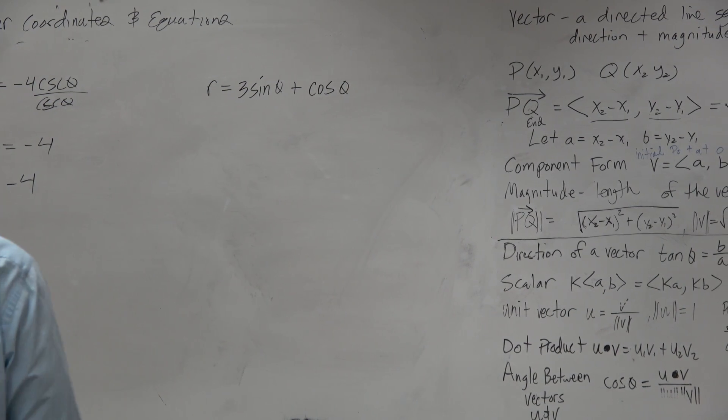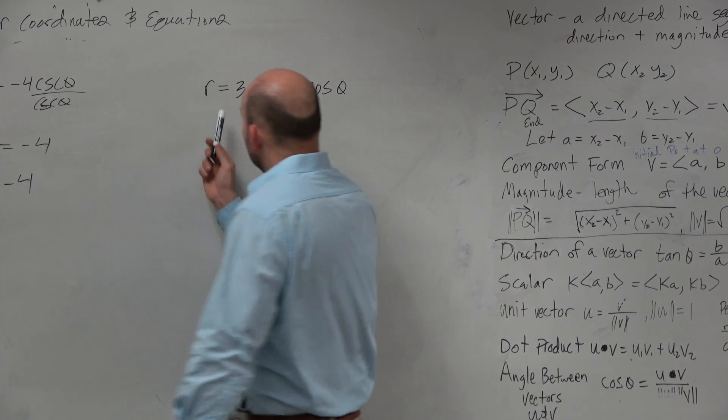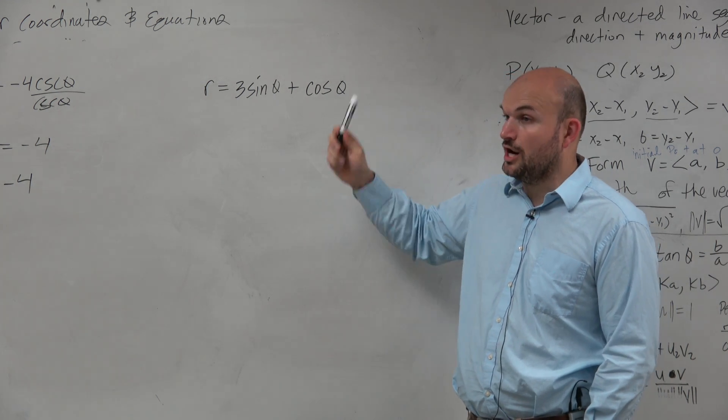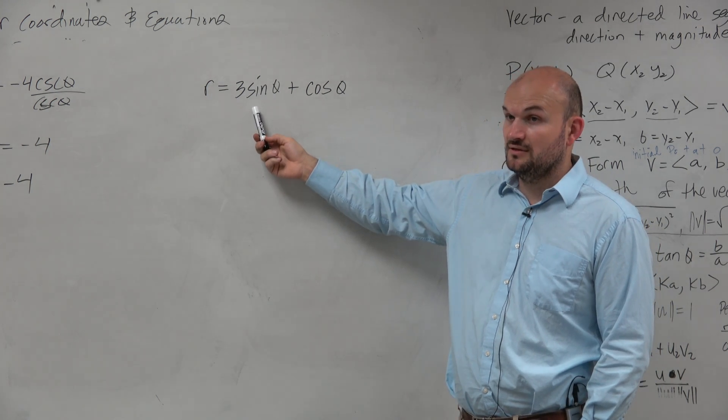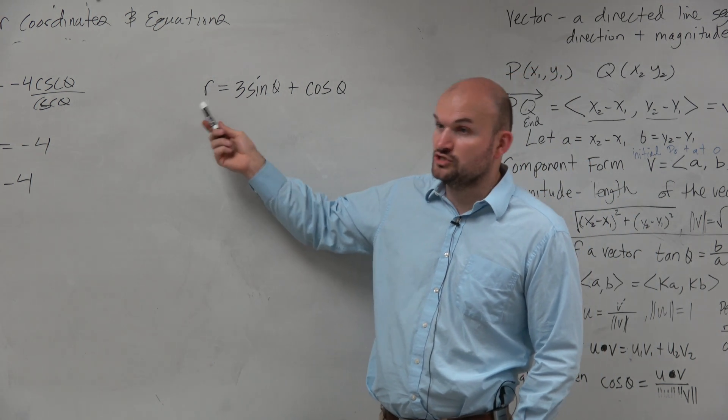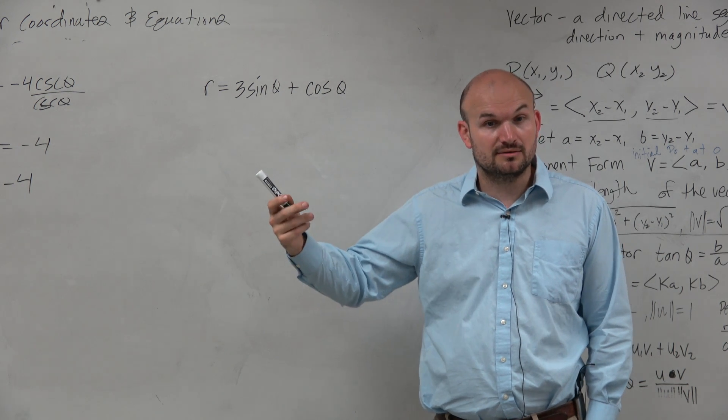All right. But this one, first of all, we said to write this in rectangular form, we need r sine of theta. Do we have r sine of theta? Like we actually need a physical r? No. r cosine of theta? No. Or we need r squared, and we could represent that as x and y. Correct?